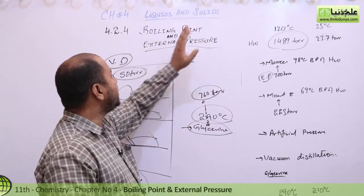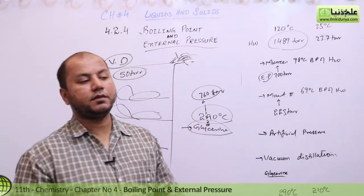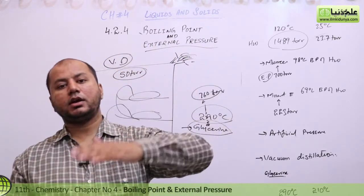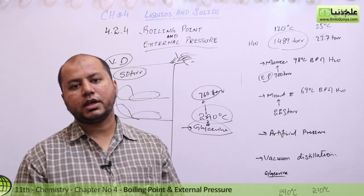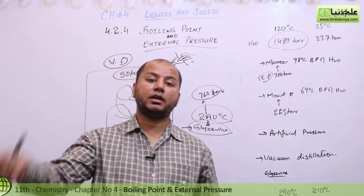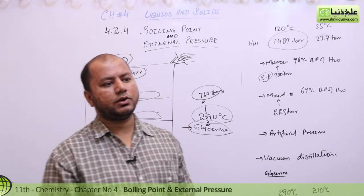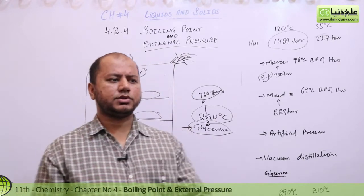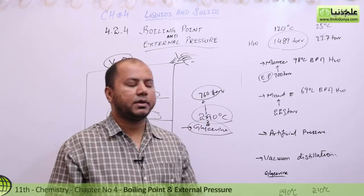This is how the boiling point changes when external pressure changes. At 50 torr external pressure and 210 degrees Celsius, glycerine easily evaporates and is obtained in purified form without decomposing. This explains why glycerine requires only 210 degrees to evaporate under vacuum, and it also explains the role of external pressure in controlling decomposition.